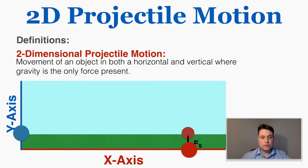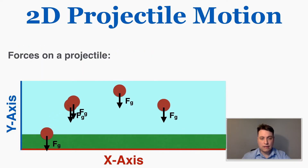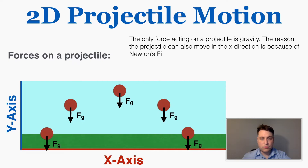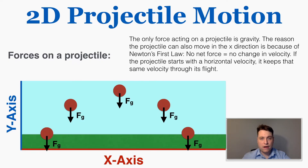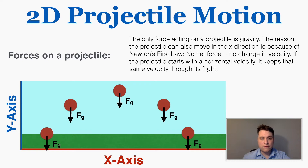The forces on a projectile are a little counterintuitive. If we draw the chart of the forces at different points, it's always only going to be the force of gravity — there's no other force acting on a projectile. Later in this unit we'll talk about air resistance that can act on projectiles, but for most physics problems we assume that air resistance is not there. So the only force acting on this projectile is gravity.